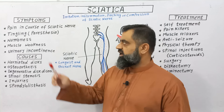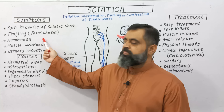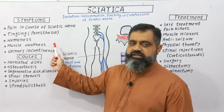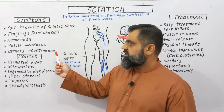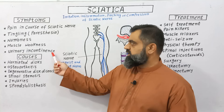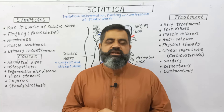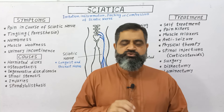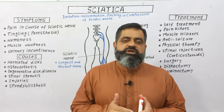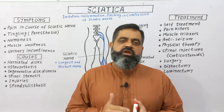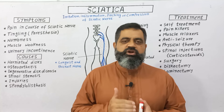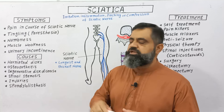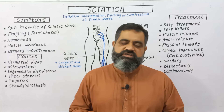Along with the pain, there is tingling known as paresthesia in the leg, and also numbness. At the same time, muscle weakness can also occur in the lower back and in the muscles of the leg. In severe cases of sciatica, urinary incontinence can occur, meaning a person cannot hold or control the movement of urine or stool. This involuntary removal of urine or stool from the body is known as urinary incontinence and is usually caused by sciatica pain.